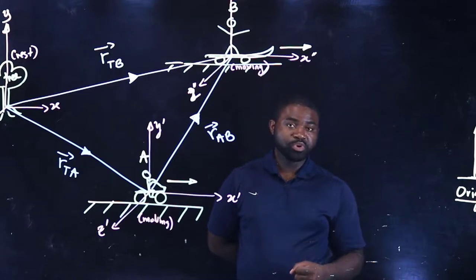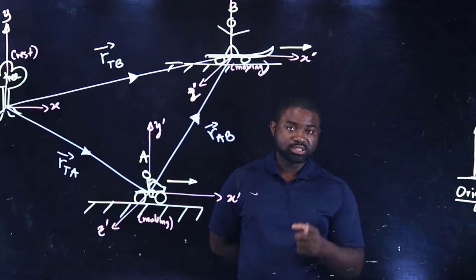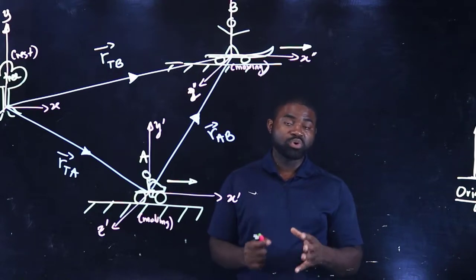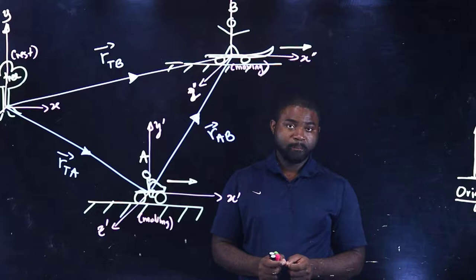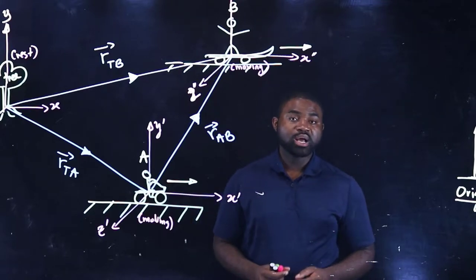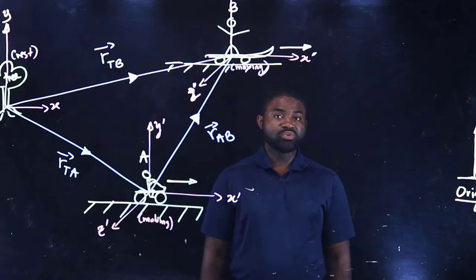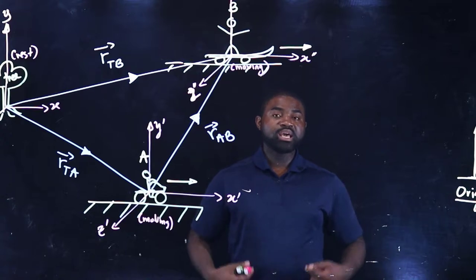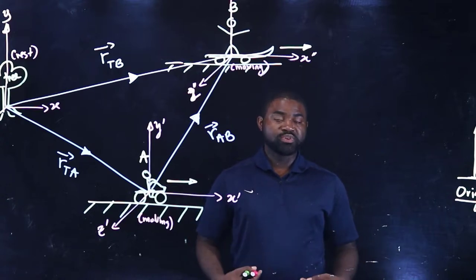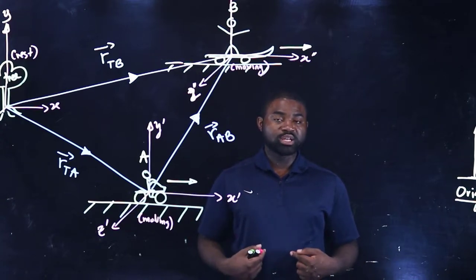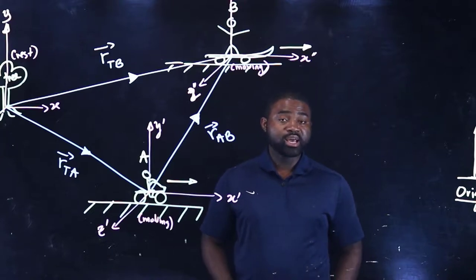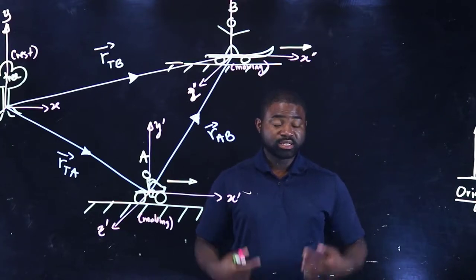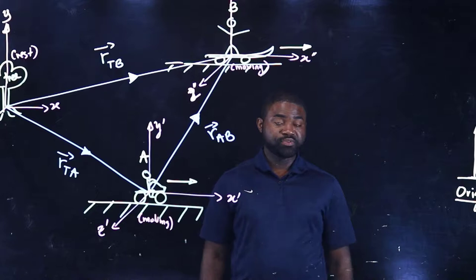The reference point plus a set of coordinate axes defines what we call a reference frame. For example, I am standing inside a room. My reference frame is a set of coordinate axes attached to the floor where I am standing. That defines my reference frame.